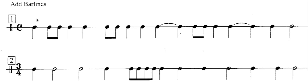So the first example has 4-4 meter, because C is the same thing as 4-4, which means there should be four quarter notes per measure. So let's start counting from the first one.